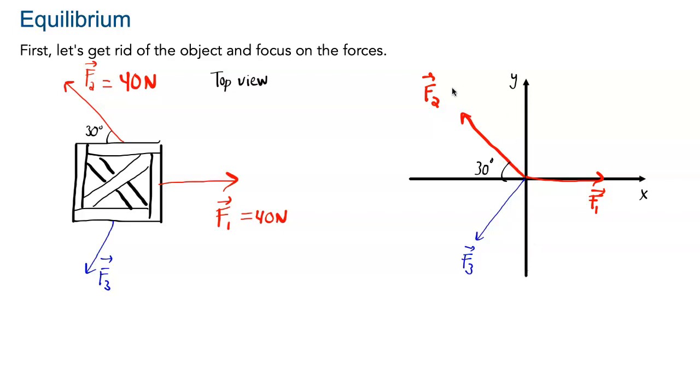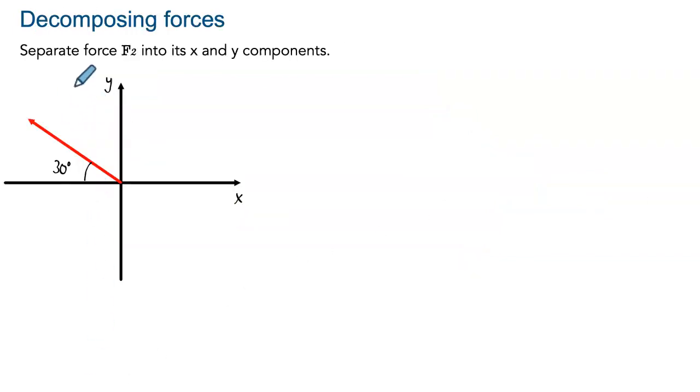The first problem we get is that F2 is in diagonal here, so we need to break it up. So that's the next step: to decompose the vector F2 into its x and its y component. This is not super difficult, but maybe it requires a refresher. So F2 we know has a strength of 40 newtons.